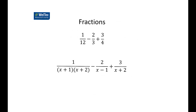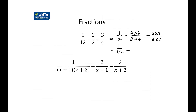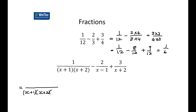With three or more fractions, we proceed the same way. For a three-fraction example with common denominator 12: we get 1 over 12 minus 8 over 12 plus 9 over 12, which equals 2 over 12, or 1 over 6. We can do the same with algebra — the common denominator will be (x plus 1)(x plus 2)(x minus 1) in each case.